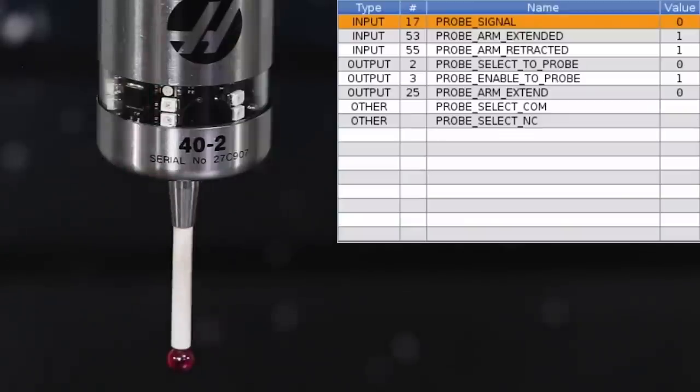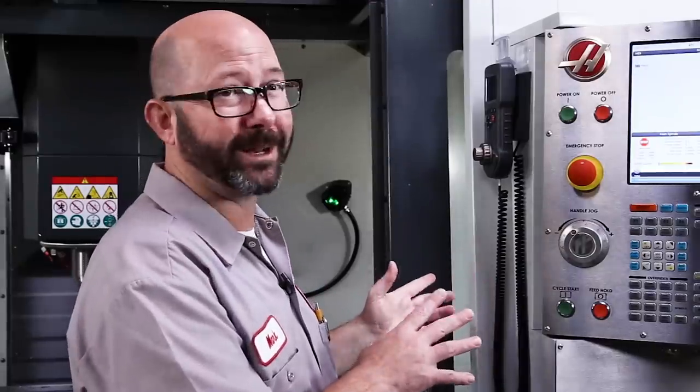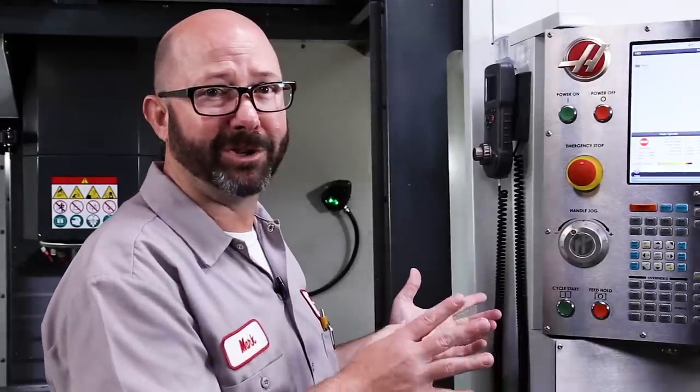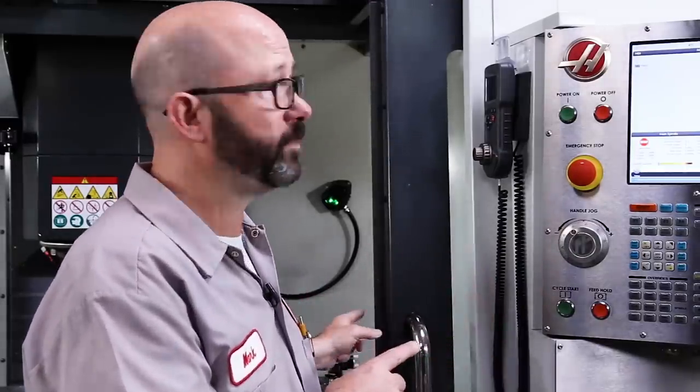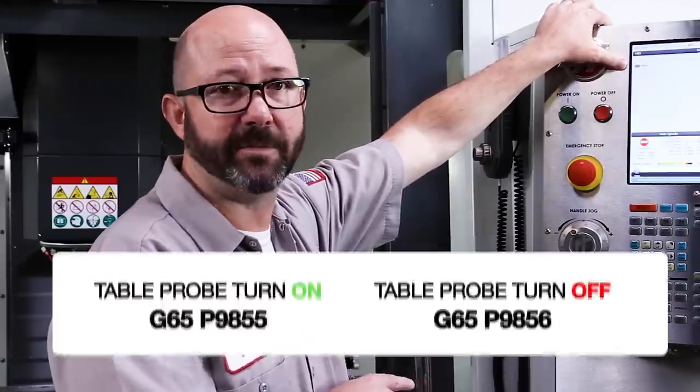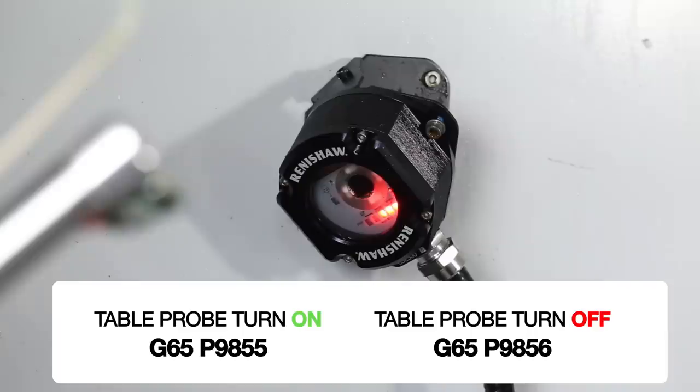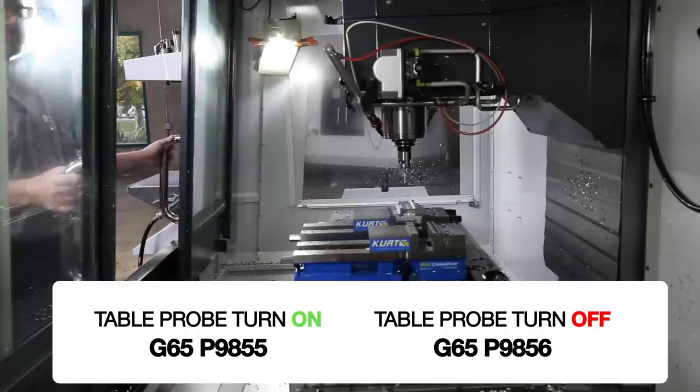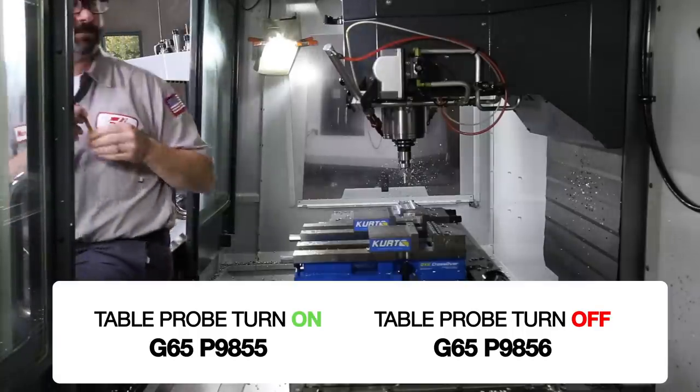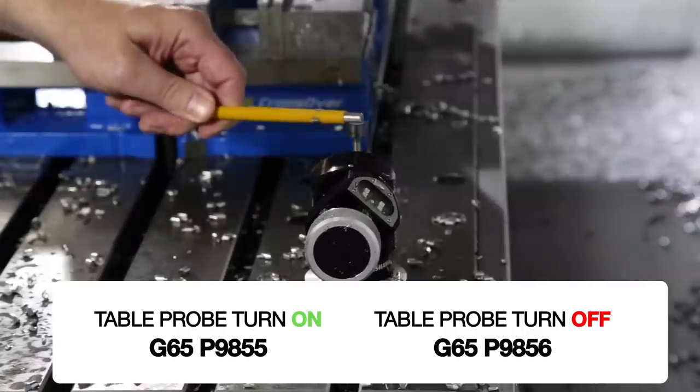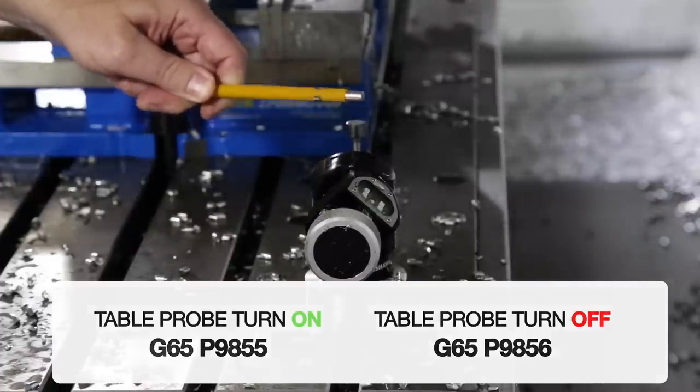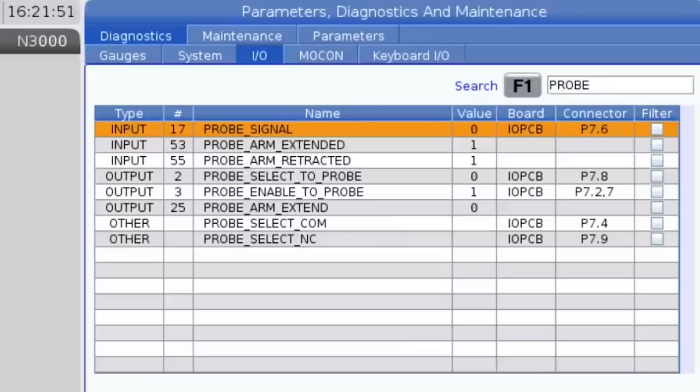So we've shown you the spindle probe really quick, not that we're doing this today, but you can do the same thing with your table probe. We can command a G65P9855. And that will turn the tool probe, the table probe on. And G65P9856 will turn that table probe off. You can check that the same way. You can tap it with your finger and see that input change.